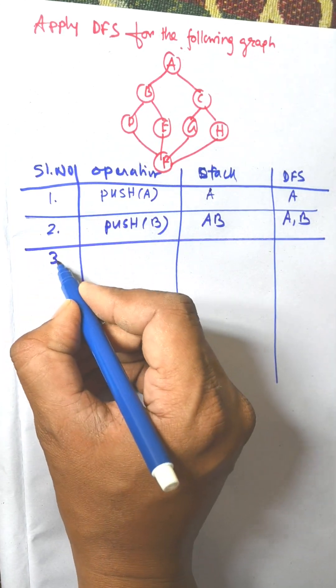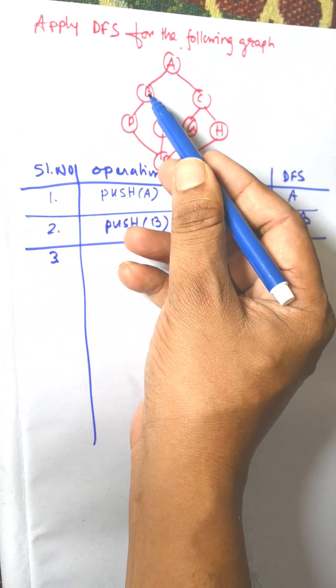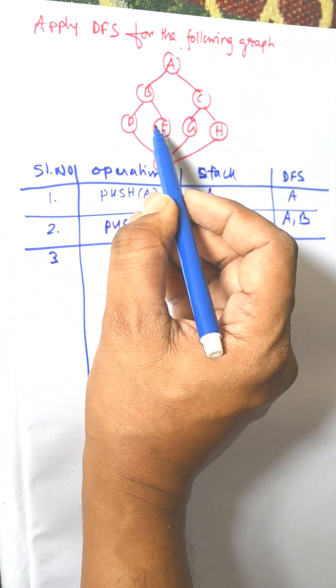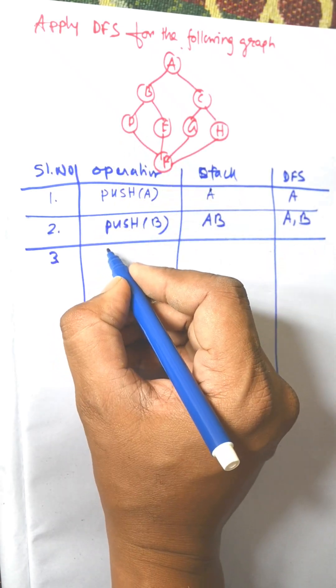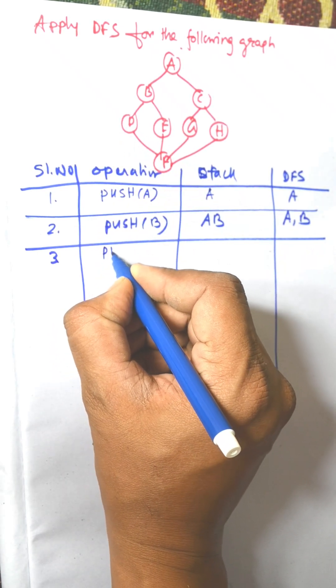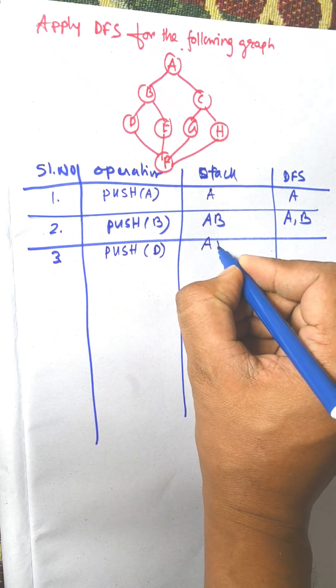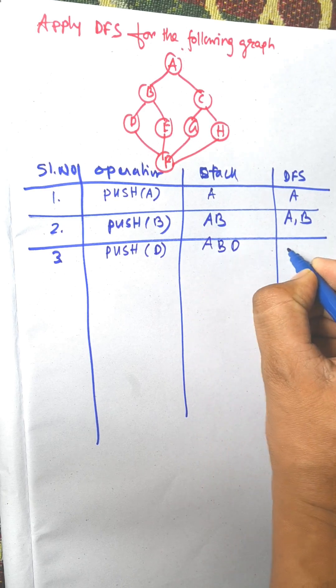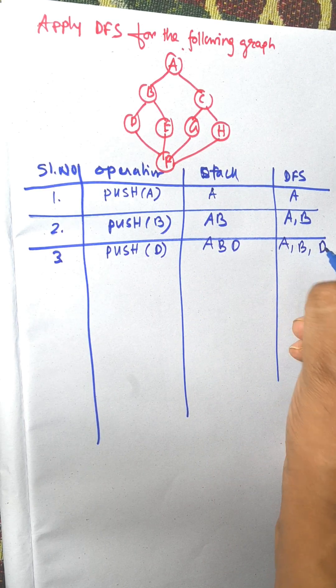Serial number 3. From B we need to visit either D or E. According to alphabetical order, D is first, so push D. Now the stack is A, B, D and the visited list is A, B, D.